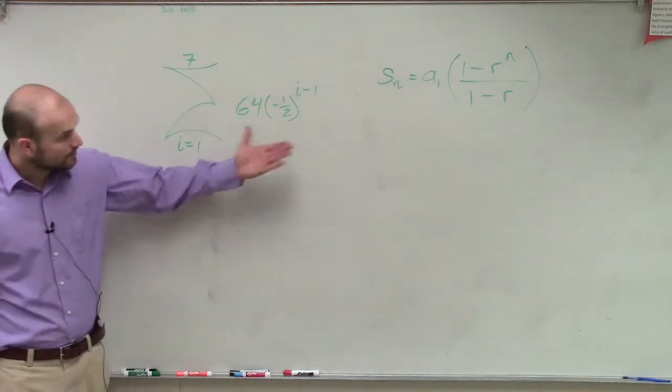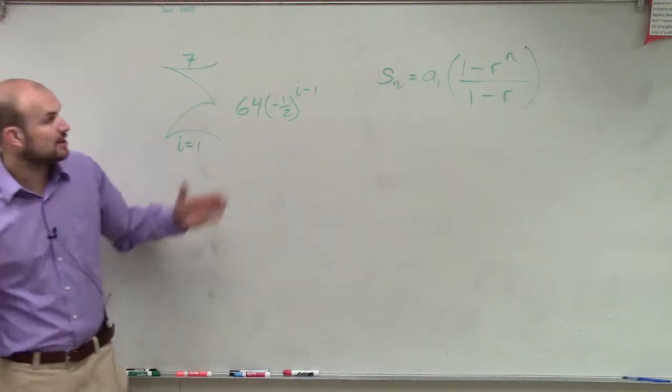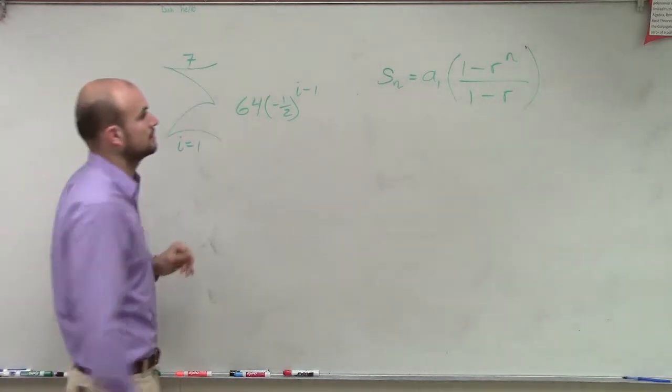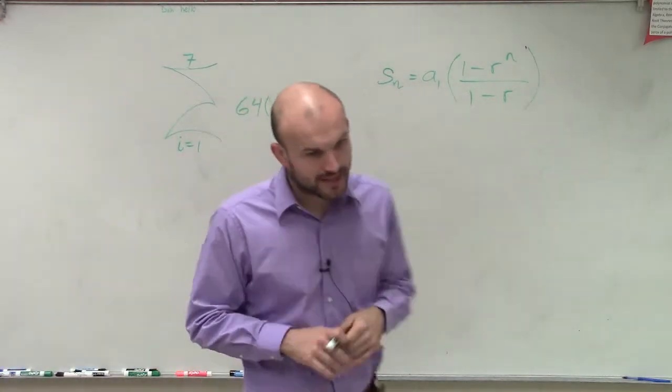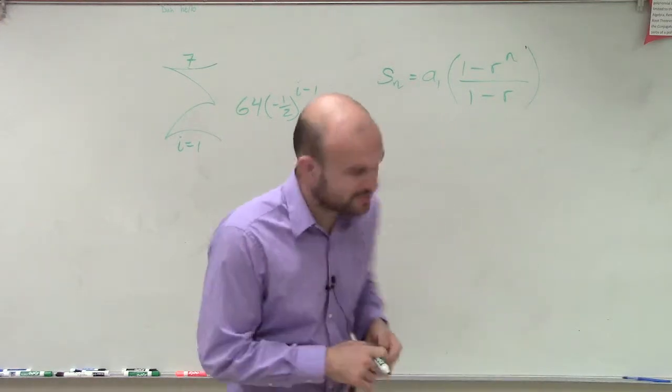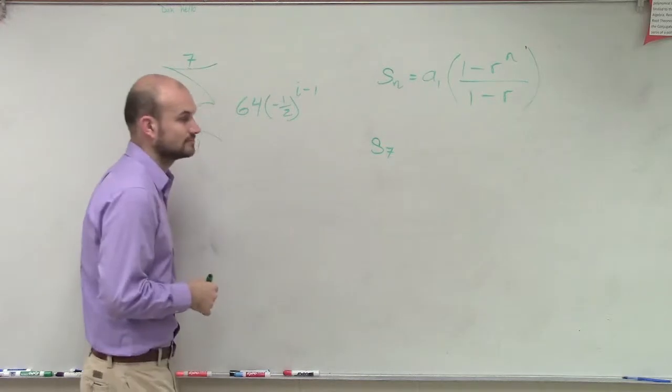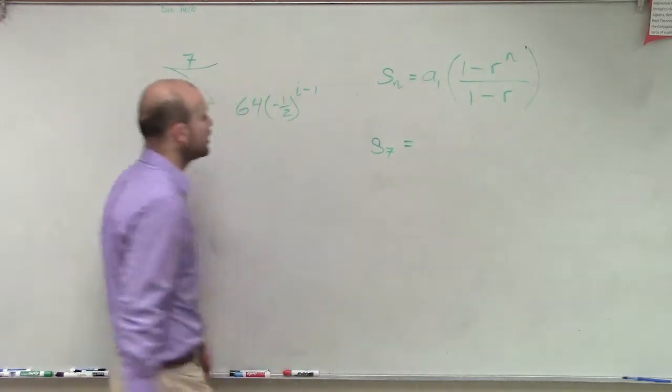So now we look at what we have, and we determine we want to find the partial sum of 7, correct? Because we had theirs. Find the geometric sequence. So we want to find our partial sum.